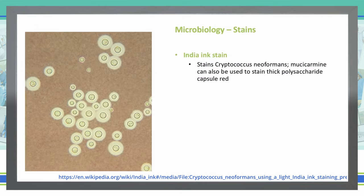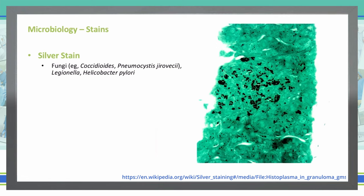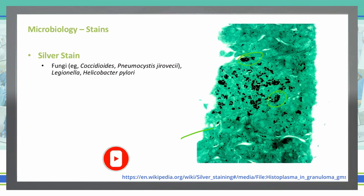Another stain is the India ink stain, and we can also use mucicarmine to stain the thick polysaccharide capsule red on top of a black background, useful for Cryptococcus. Finally, silver stain is used to stain fungi, specifically Coccidioides, Pneumocystis jirovecii, Legionella, and Helicobacter pylori. The photo shown is staining of Histoplasma, seen as black round structures inside a liver biopsy. Silver stain is particularly useful for staining carbohydrates within the organism.